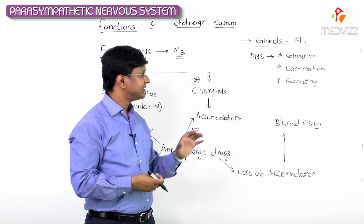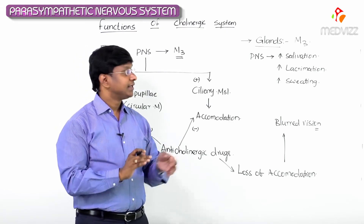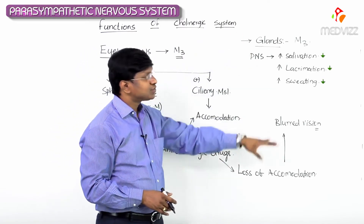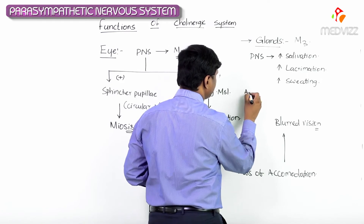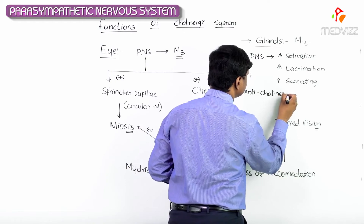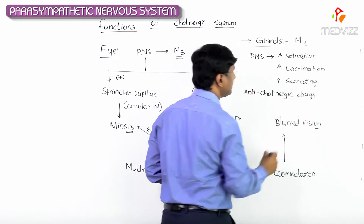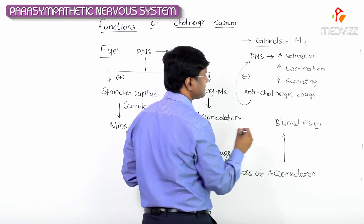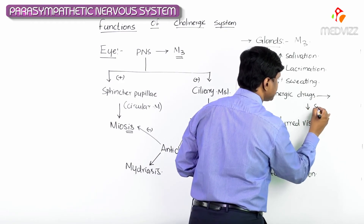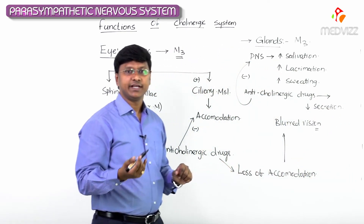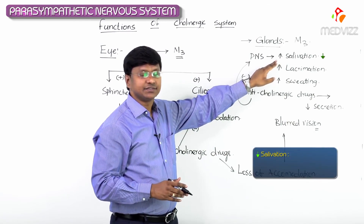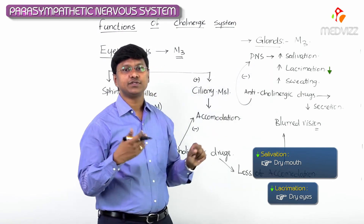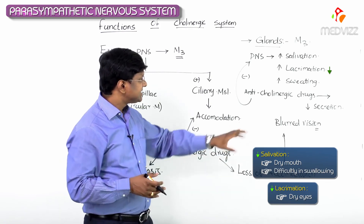By stimulating the sweat glands, the cholinergic nervous system will increase sweating. On the other hand, anticholinergic drugs will reduce all the secretions — they inhibit the action of the parasympathetic nervous system. So the individual will have decreased salivation resulting in dry mouth, decreased lacrimation resulting in dry eyes, and because of the dry mouth the individual can also have difficulty in swallowing.